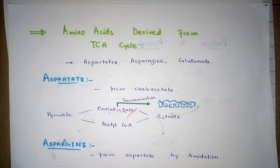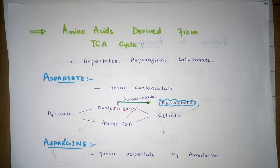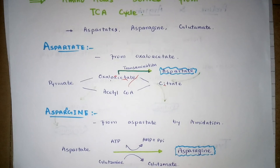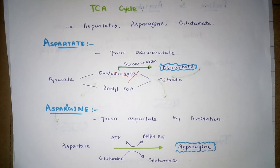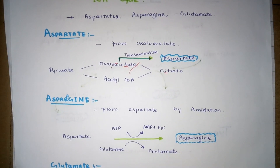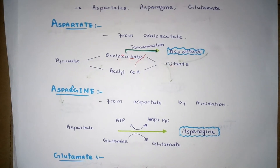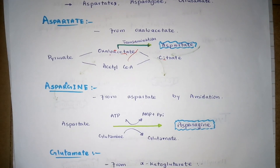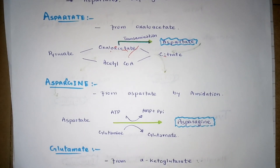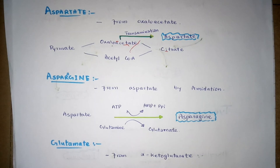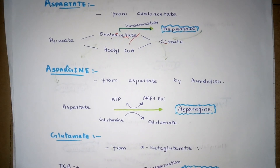So, these are the amino acid synthesis processes by which certain amino acids are produced or derived from various compounds. I hope you now have a clear concept of the synthesis of amino acids. Thank you very much.